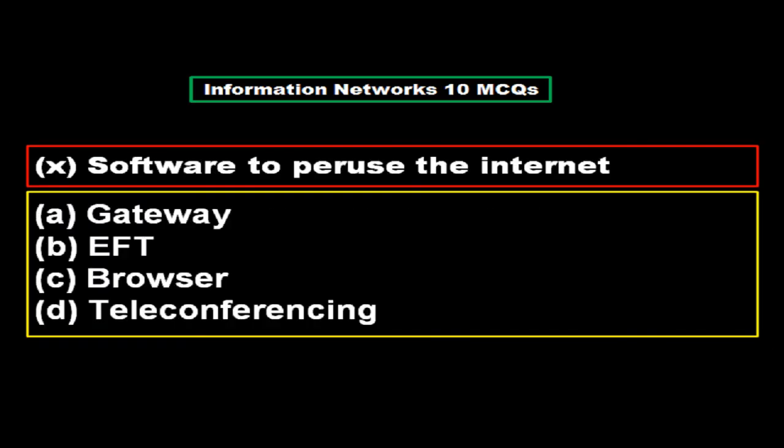Software to browse the internet: option A gateway, option B EFT, option C browser, option D teleconferencing. The right answer is option C, browser.